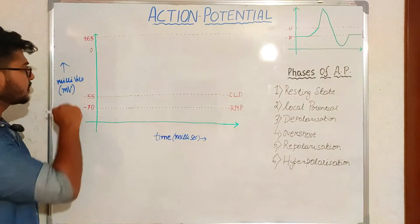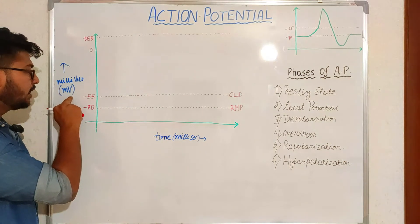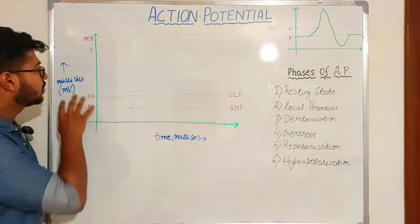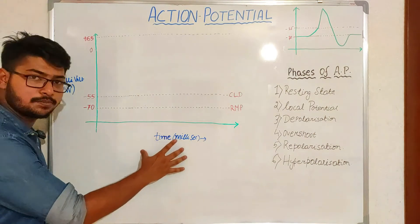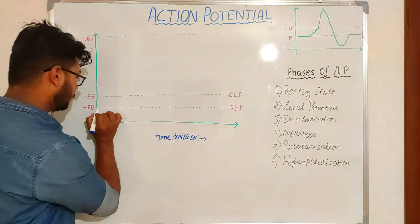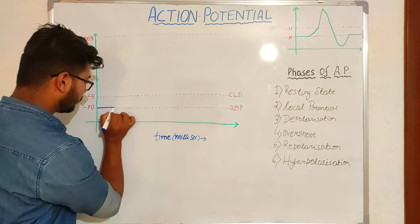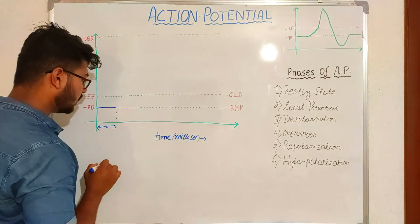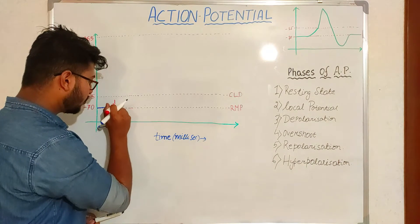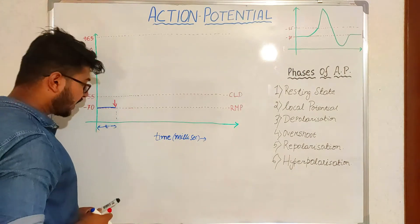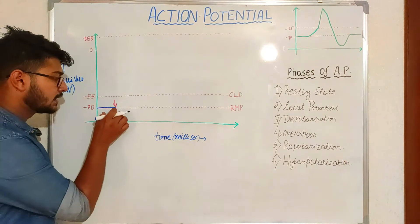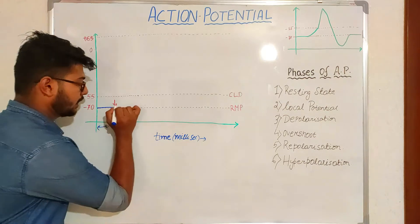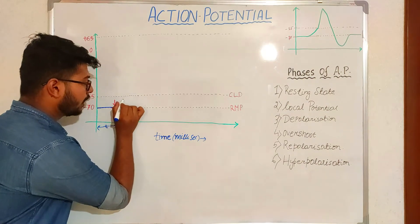In this graph, the Y-axis consists of millivolts or potential, and the X-axis consists of time — so potential changes with respect to time. In the starting condition, the neuron is at rest. For a certain amount of time the neuron was at rest, then suddenly an external stimulus of threshold energy or threshold strength acts on the neuron.